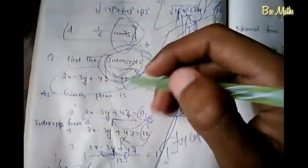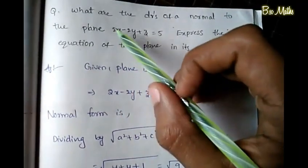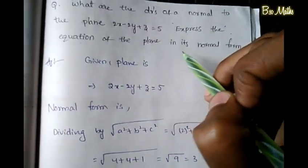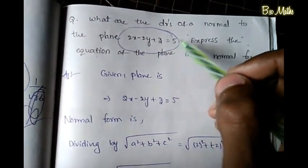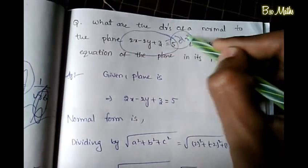So the intercepts are a = 6, b = -4, and c = 3. You can find the intercept form by dividing the plane equation by the RHS. Next question: what are the direction ratios (DRs) of a normal to the plane 2x - 2y + z = 5? Also express the equation of the plane in its normal form.